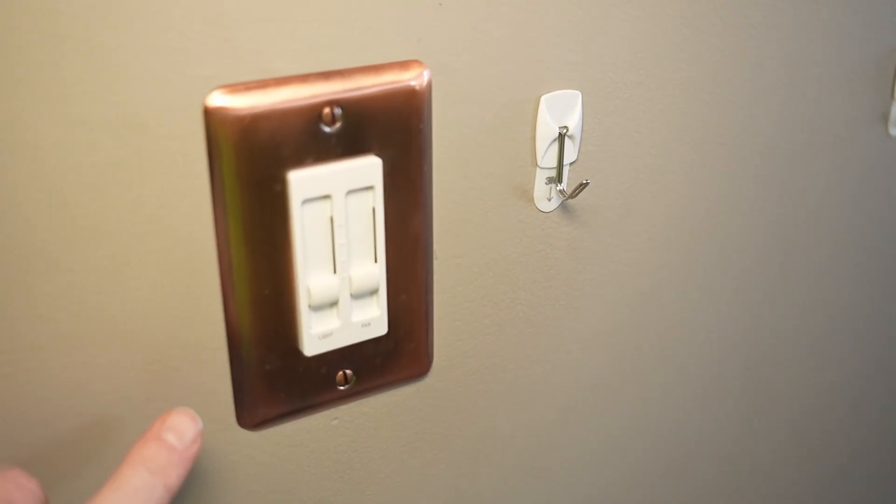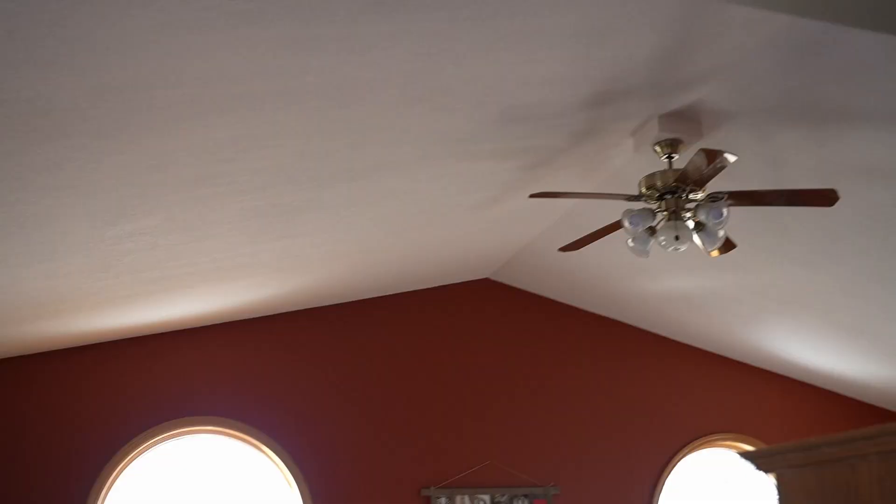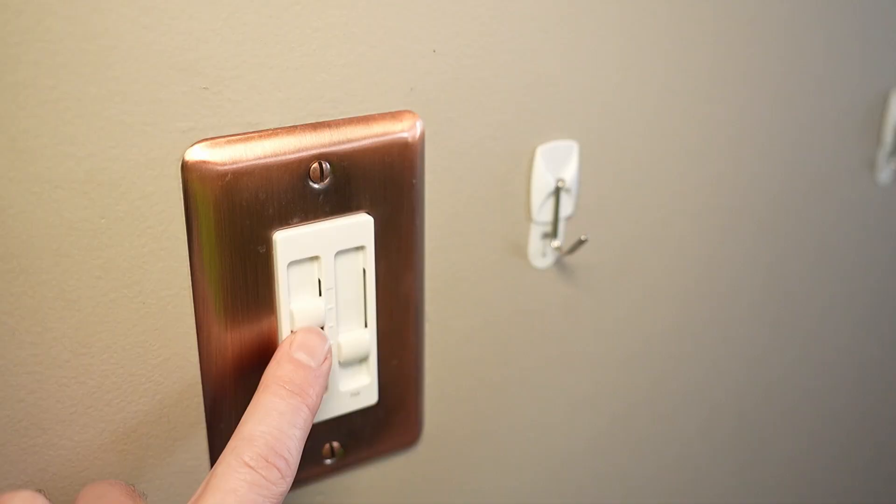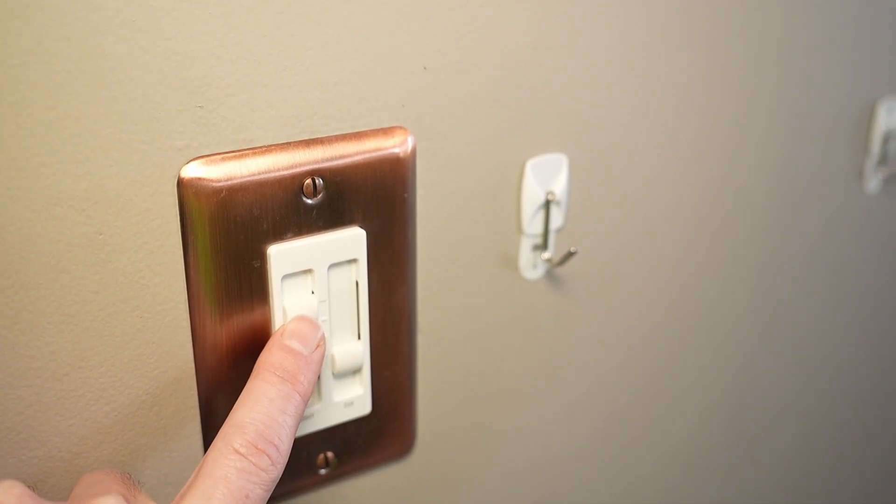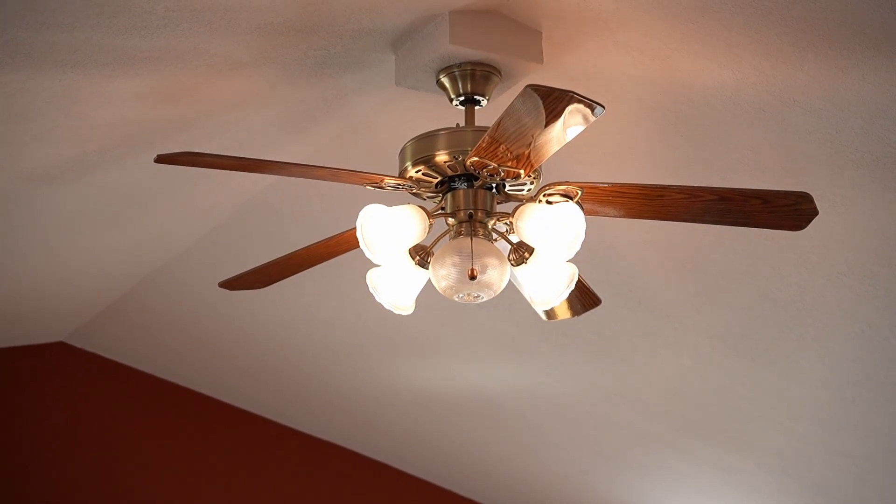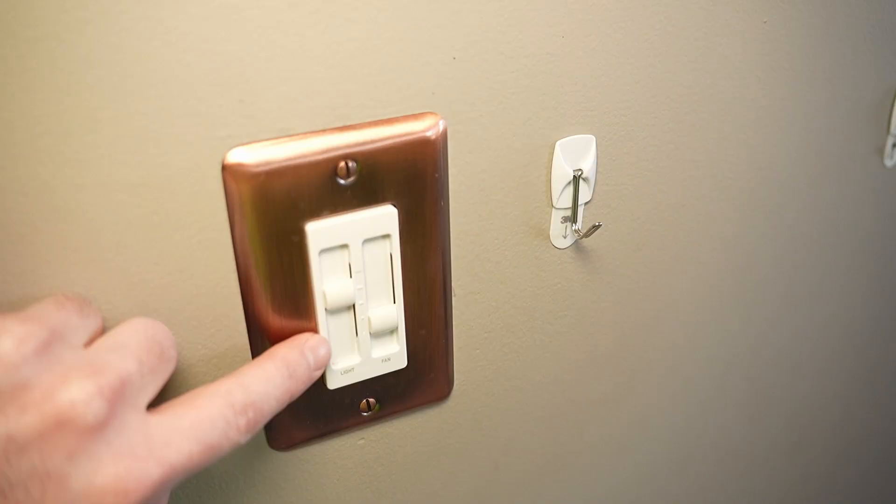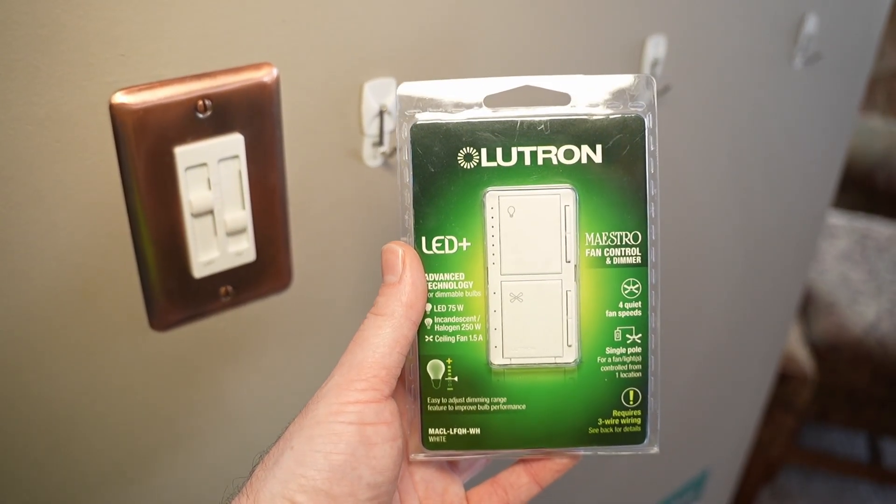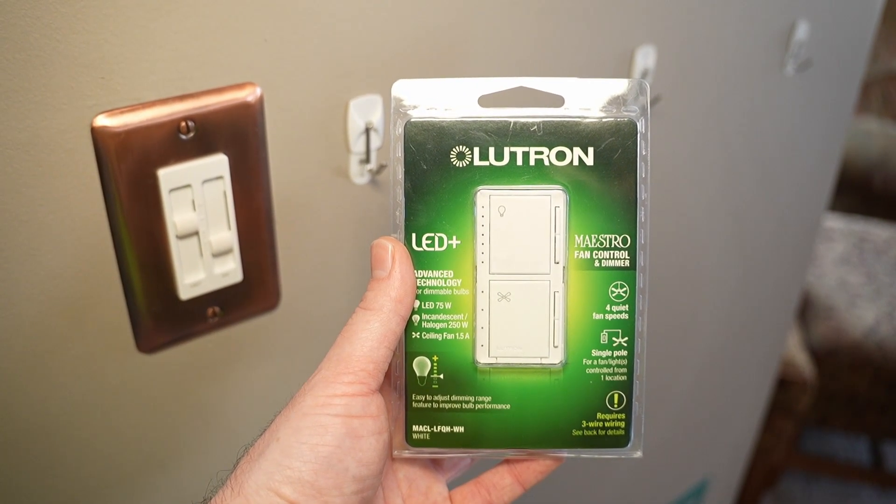This combination light and fan controller has failed. Let's replace it. The issue here is when the light is turned on, it works just fine if we only bring the dimmer partway up. But if we push the dimmer switch all the way up, you'll see the light actually starts flickering. The actual slider is going bad. So we're going to go ahead and replace this with a new combination style fan controller and dimmer switch.